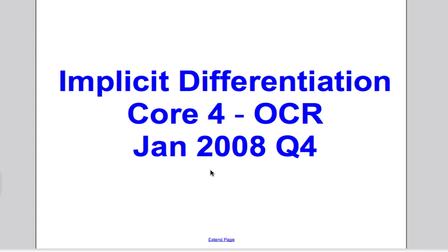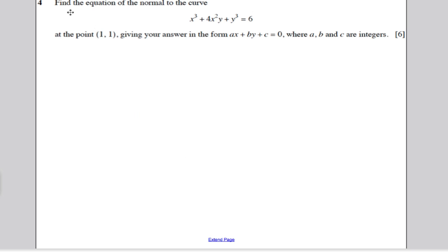Hi there. In the following video, I'll answer question 4 of the January 2008 Core 4 OCR A-level paper. Again, this is my second video in regard to implicit differentiation. Let's take a look. The equation of the normal to the curve at the point (1,1), find the equation of the normal to the curve at the point (1,1).